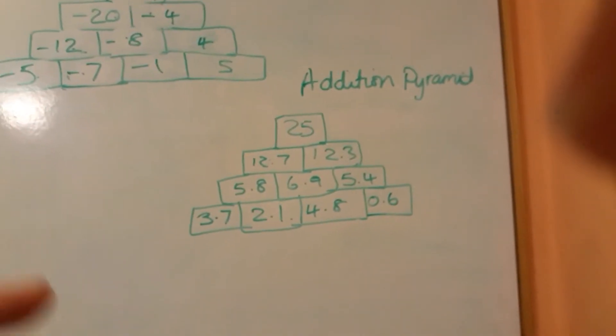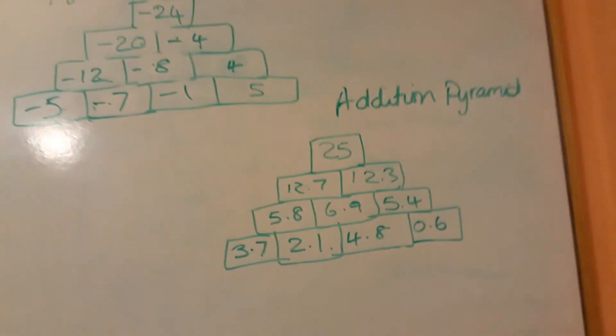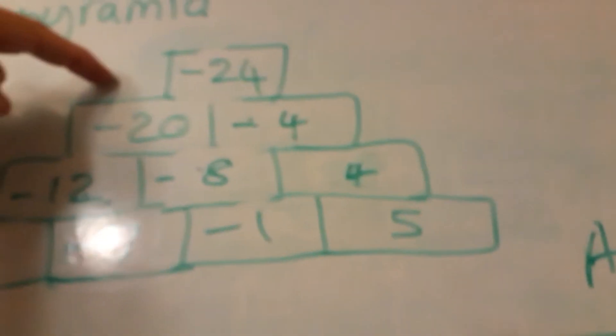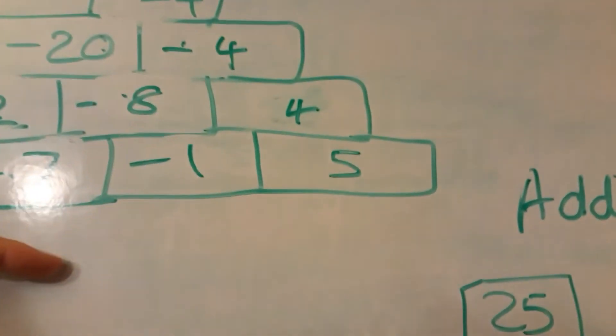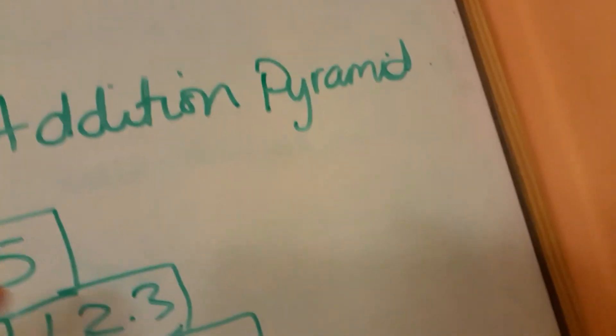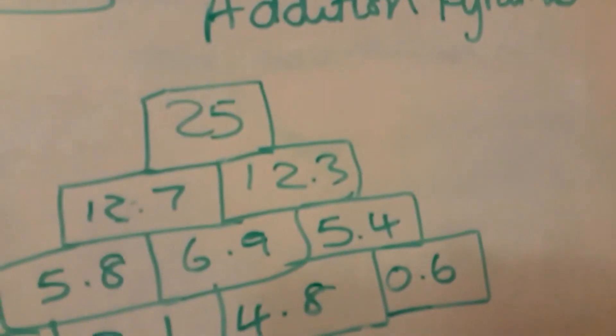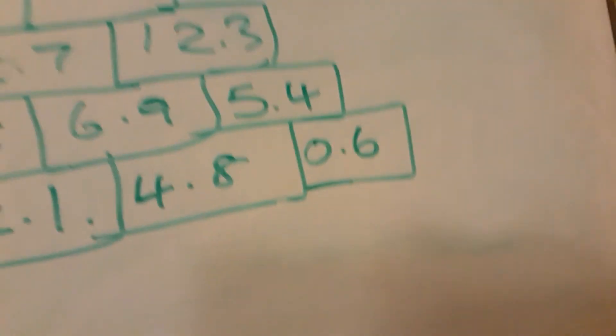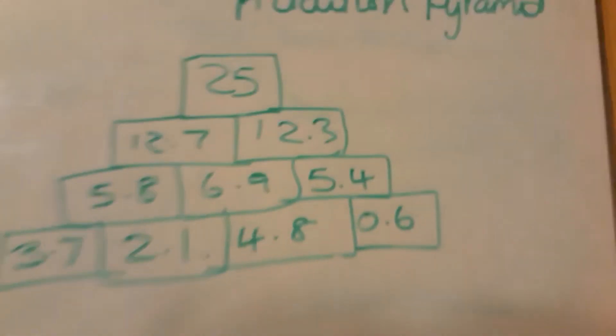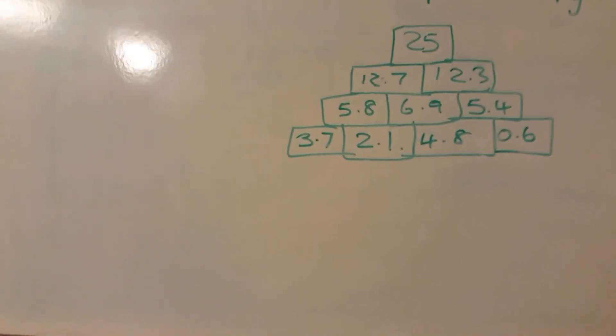You're working downwards with that. Depending on where your numbers are, if you've got a number up there, then you can work your way down. If you haven't got your number there, then you have to do all the other bits to fill it in before you can get to the top bit. Should we try one more?